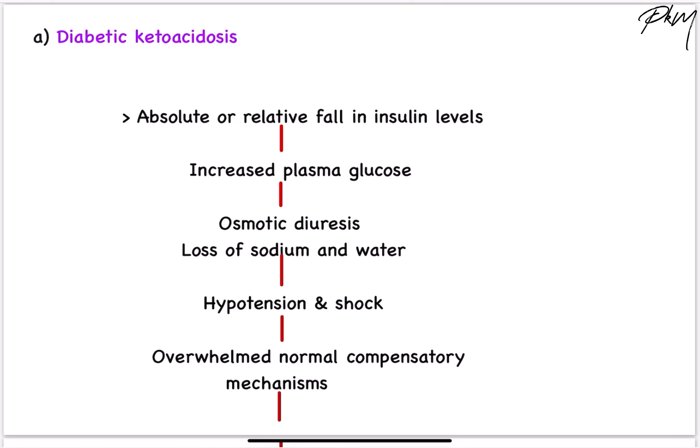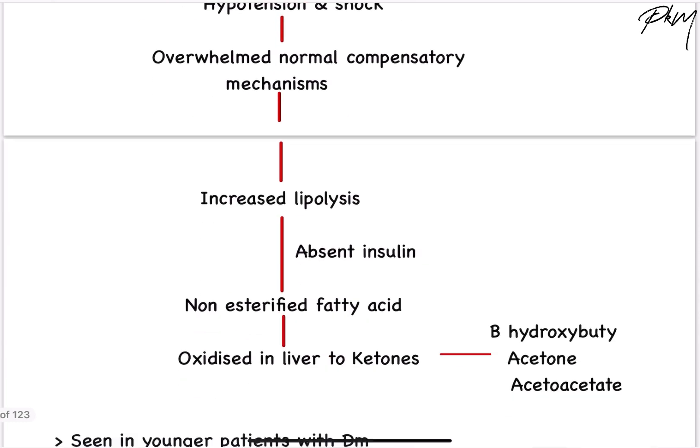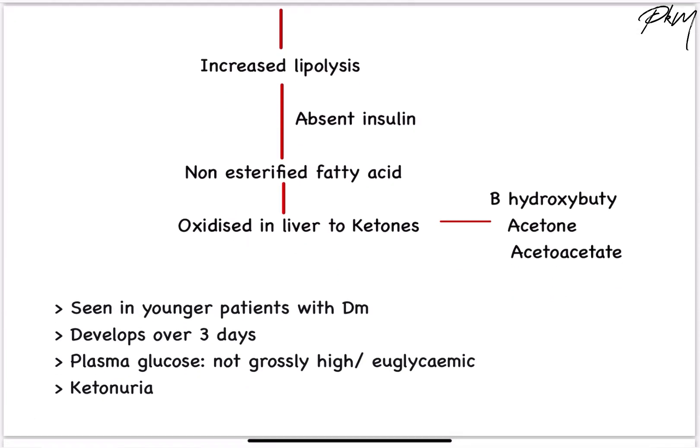DKA or diabetic ketoacidosis results from absolute or relative deficiency of insulin, resulting in raised blood glucose, which in turn results in osmotic diuresis and loss of sodium and water in urine. Patient presents with hypotension and shock, which leads to overwhelming of the normal compensatory mechanisms. Insulin-mediated glucose uptake is impaired, and due to reduced fructose 2,6-bisphosphate, gluconeogenesis occurs in place of glycolysis. In DKA, due to absence of insulin, hormone-sensitive lipase is increased, resulting in lipolysis and production of free fatty acids.